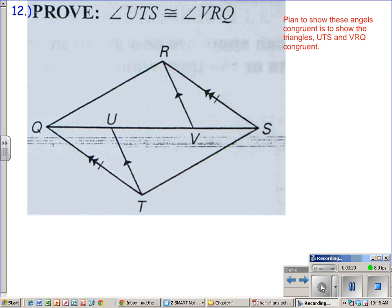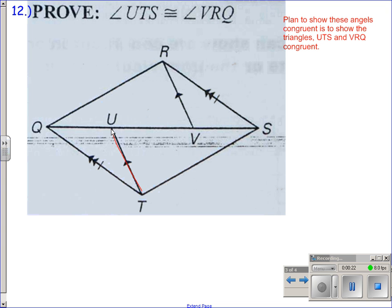So basically to show those two angles are congruent, you need to show these two triangles congruent: triangle UTS and triangle VRQ. If you can show those two triangles congruent, you're going to have the corresponding angles be congruent. We need to get those two triangles to be the same.